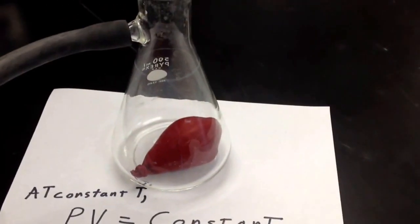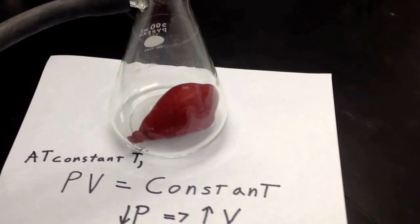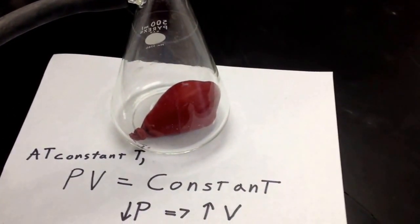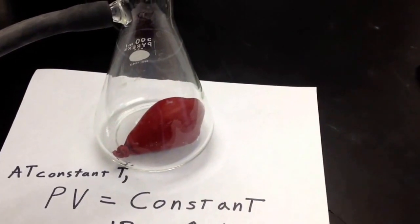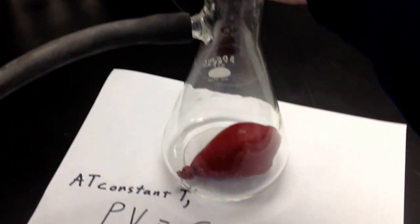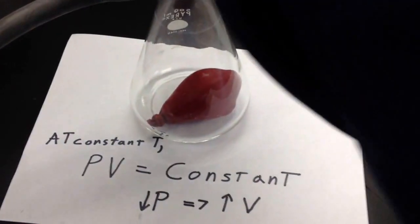So, pressure and volume are inversely related. You decrease the pressure, volume increases. You increase pressure, volume decreases. Pressure and volume, inversely related.